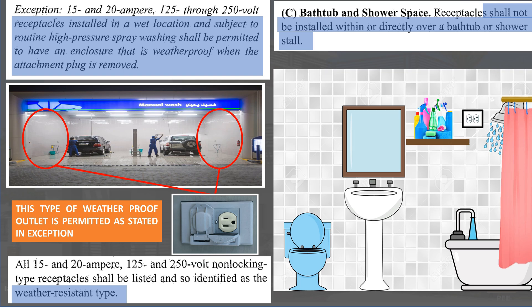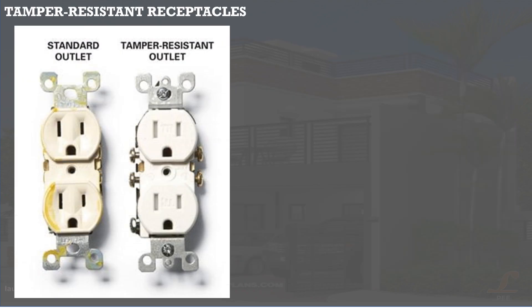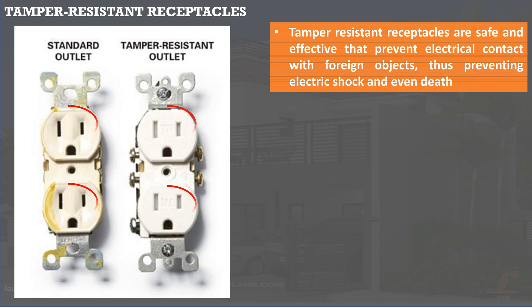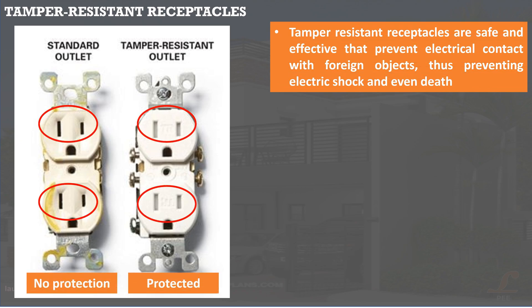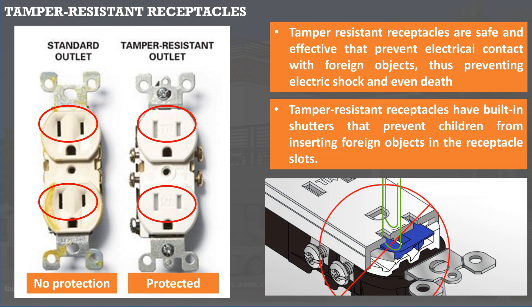One type of outlet required for the safety of people is the tamper resistant receptacle outlet. Compared with standard outlets, these outlets are safe and effective — they prevent electrical contact with foreign objects, thus preventing electric shock and even death. These built-in shutters prevent children from inserting foreign objects in the receptacle slots.